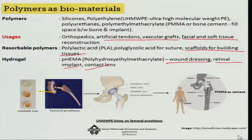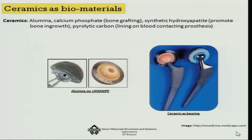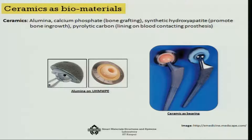Then there are ceramics, which you see again in prosthetics mostly as joints, because one of the most important properties of ceramics is that their coefficient of friction is quite low - almost like a frictionless material - which is very good in joints. They are used in various types of joints like knee joints and shoulders. Also, where you need high compressive strength, for example in dental prosthesis, ceramics are used in a very large manner.